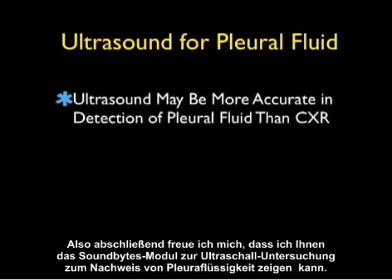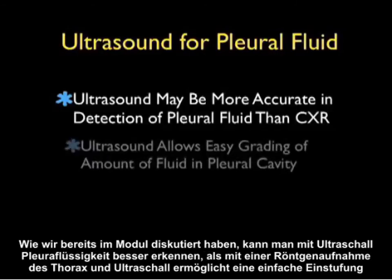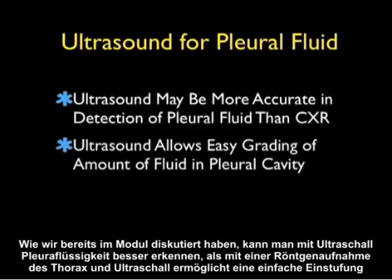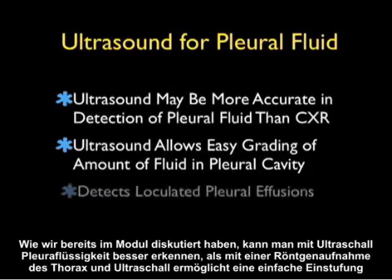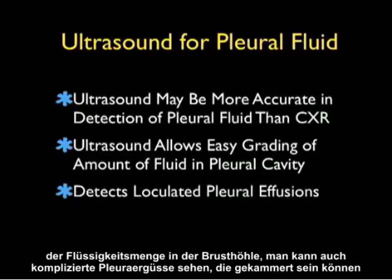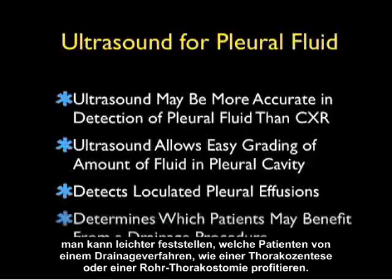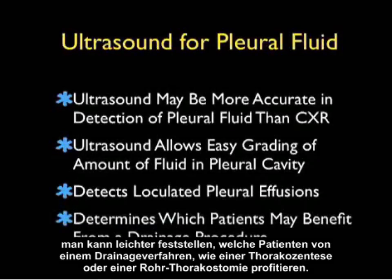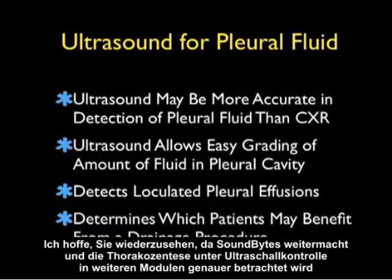In conclusion, I'm glad I could share this SoundBytes module going over the ultrasound examination for the detection of pleural fluid. As we discussed, ultrasound may be more accurate in detection of pleural fluid than a chest x-ray, and ultrasound allows easy grading of the amount of fluid within the pleural cavity. It can also detect complicated pleural effusions that may be loculated, and can help determine which patients may benefit from a drainage procedure such as a thoracentesis or tube thoracostomy. I hope to see you back as SoundBytes continues — in further modules we'll look closer at the thoracentesis procedure under ultrasound guidance.